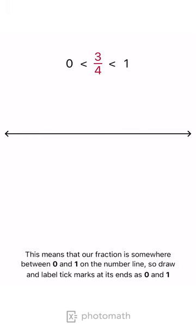This means that our fraction is somewhere between 0 and 1 on the number line, so draw and label tick marks at its ends as 0 and 1.